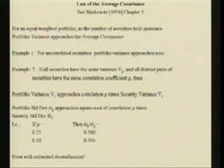What we are really interested in is standard deviation, which is the square root of the variance. The standard deviation of the portfolio approaches the square root of the correlation coefficient times the security standard deviation. If the correlation coefficient is 0.25, which is not unusual for correlations among securities, then the standard deviation of the portfolio divided by the standard deviation of the security is 0.5. So if every security had a correlation of 0.25 with every other security, the standard deviation of the portfolio would be 50 percent as great as if you put all your money in one stock.